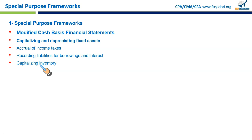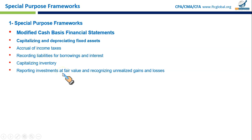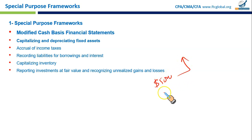Fourth modification: capitalizing inventory. In cash basis, inventory is immediately expensed, but in modified cash basis, the cost of items purchased is treated as an asset until sold. For example, a retail store that buys $10,000 worth of items doesn't count it as an expense until items are sold. Fifth: reporting investments at fair value and recognizing unrealized gains and losses. If a company holds stock purchased for $5,000 and its price rises by $500, that $500 is reported as an unrealized gain.